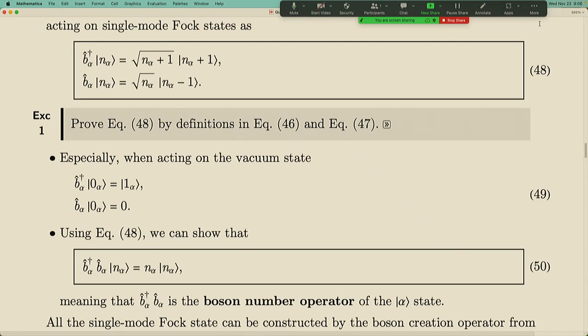Given those rules, one can easily show that if you apply b†b to the n-particle state, the state is the eigenstate of this operator with eigenvalue exactly equal to the number of particles. So b†b actually counts the particle number. It's like you are removing a particle and then putting a particle into the system, and originally you think it doesn't do anything — but actually it counts the number of particles, which is an interesting property of this bosonic operator.